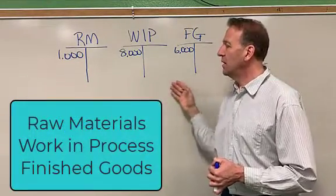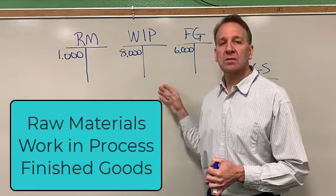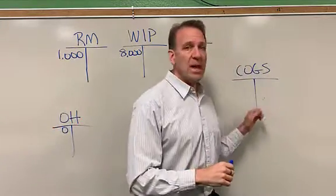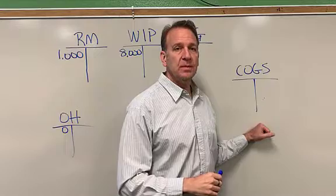These three are inventory accounts. When we sell the product, that's when we have cost of goods sold.